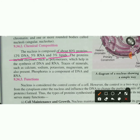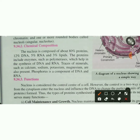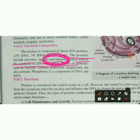The proteins inside the nucleus include enzymes such as polymerases, which help in the synthesis of DNA and RNA. In higher classes you will learn about transcription and translation, and you will study the polymerases enzyme in detail, which helps in making copies of DNA and RNA.